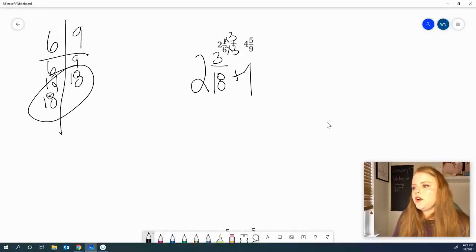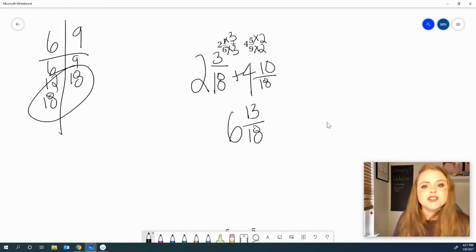I multiply my 9 times 2 to get me to 18th, so I multiply my 5 times 2 as well. 4 and 10 eighteenths. Let's go ahead and add up those fractions. 3 plus 10 is 13 over 18. We leave our denominator the same. 2 plus 4 is 6. You cannot simplify that. Your answer is 6 and 13 eighteenths.